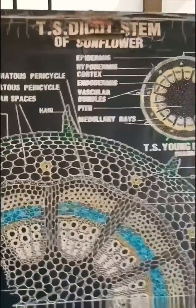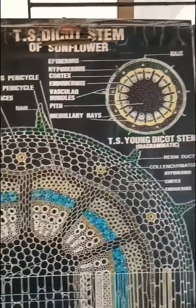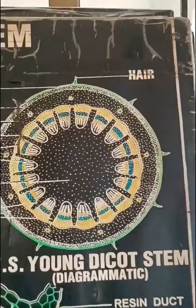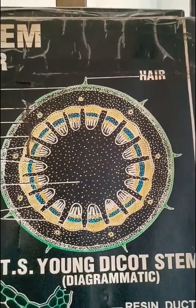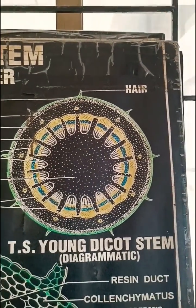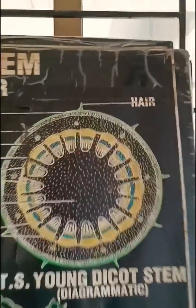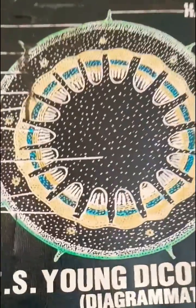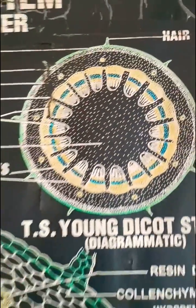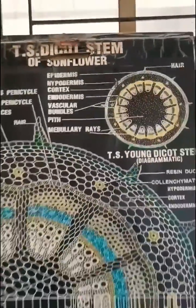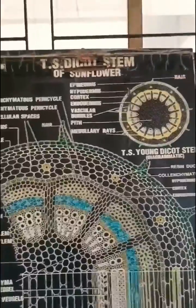Whereas in dicot stem, the vascular bundles are arranged in a ring. You can see here the vascular bundles are arranged in a ring, and that's why it is dicot stem. So in monocot it is scattered; in dicot the vascular bundles are in a ring.